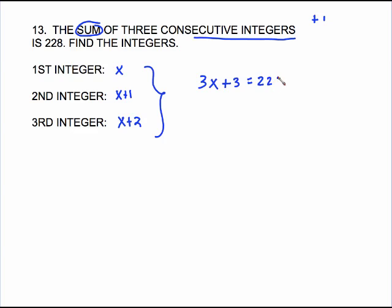So we get down to a very easy two-step equation. Subtract 3 from both sides, and we have 3x equals 225. Divide both sides by 3, and x equals 75. Now you're not finished with just finding x. What you were asked in the problem is to find the integers, find all of them.